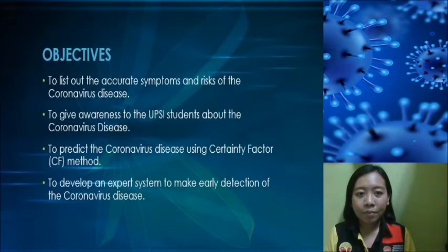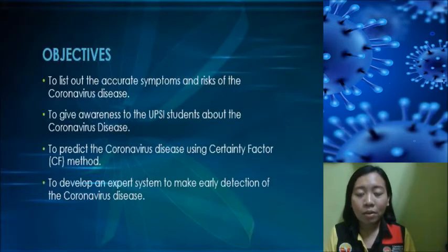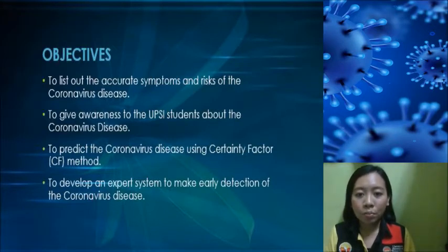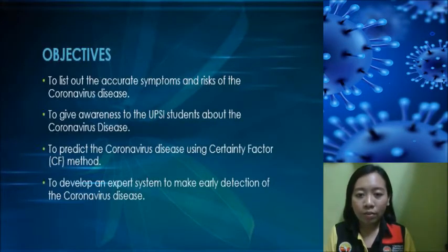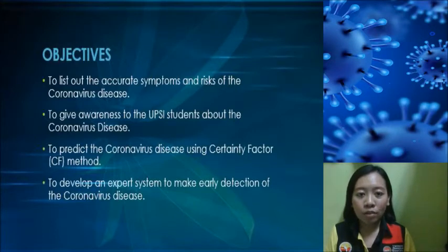For the objectives, the first one is to list out the accurate symptoms and risks of the coronavirus disease. The second one is to give awareness to students about the coronavirus disease. The third is to predict the coronavirus disease using the certainty factor method.